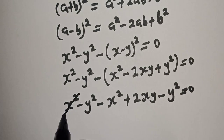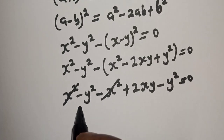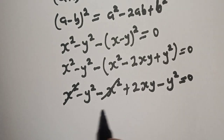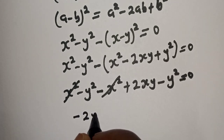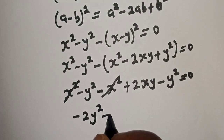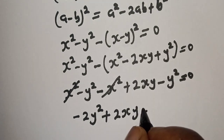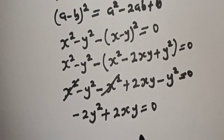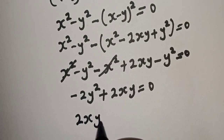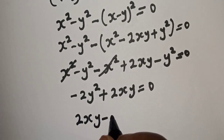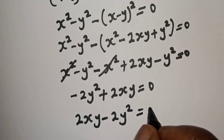Now x squared will cancel x squared. So here we have minus y squared minus y squared, giving us minus 2y squared plus 2xy is equal to 0. We can rearrange this to get 2xy minus 2y squared is equal to 0.